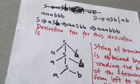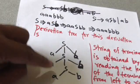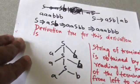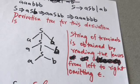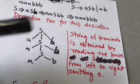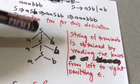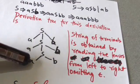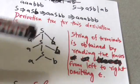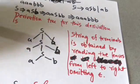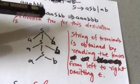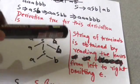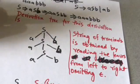This is the derivation tree or parse tree which represents this derivation. The string of terminals whose derivation is represented by the derivation tree is obtained by reading the leaves from left to right, omitting any empty string. So this derivation tree represents the derivation of a a a b b b b.